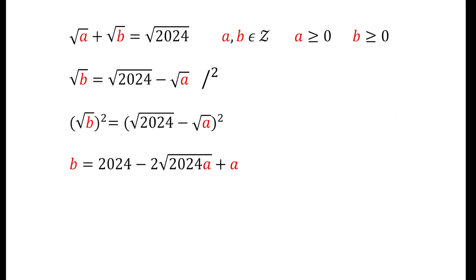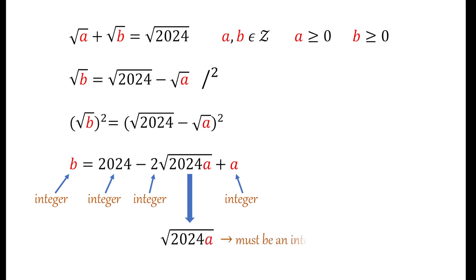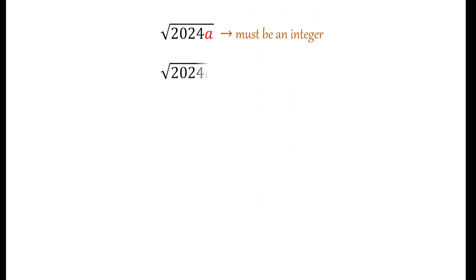Now let's think about this equation. We know that b must be an integer, 2024 is an integer, and a must be an integer. So the middle term 2√(2024a) must also be an integer. Since 2 is an integer, it follows that √(2024a) must be an integer, meaning 2024a must be a perfect square.